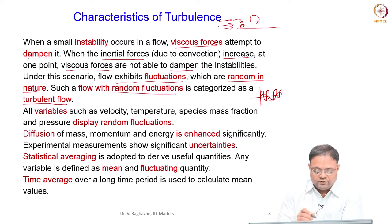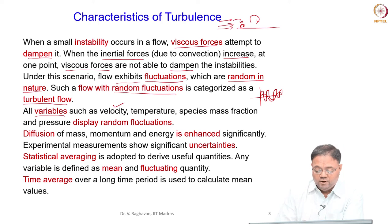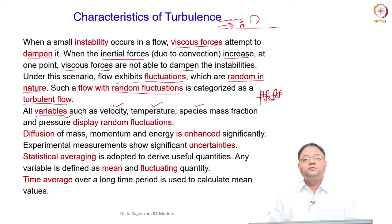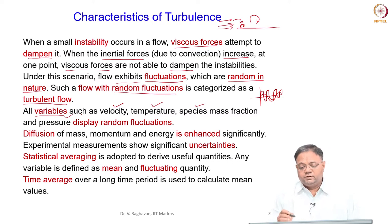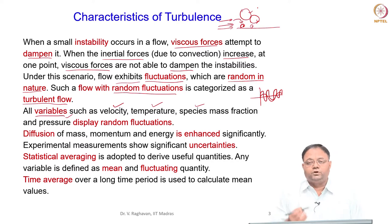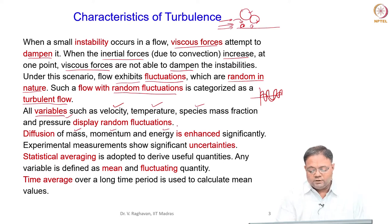Due to the fluctuations, quantities such as velocity, temperature, species mass fraction, and pressure will display the same type of random fluctuations. There will be eddies of different sizes present in the flow, and these eddies will actually enhance molecular diffusion of mass, momentum, and energy significantly.